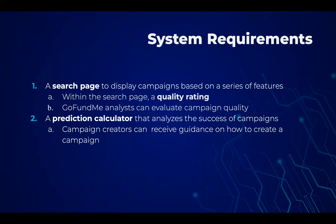To help us reach these goals, we created a list of system requirements. First, we prioritized creating a search feature that provides GoFundMe analysts with a series of search constraints. These constraints will allow the analysts to view campaigns based on the features they wish to test. The search feature also assigns a quality rating to each campaign. Second, we set up a prediction calculator that will analyze a campaign creator's inputs and report the potential success of the campaign.